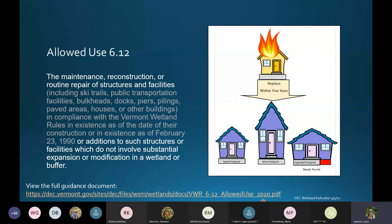We have a full guidance document for the abandonment and reconstruction portion of this allowed use. Here we have a house that unfortunately burns down — they can replace it in the same footprint, same size, or taller as long as it's within the same footprint. If it's expanding substantially, it requires a permit. A structure or facility is considered abandoned if its original features are not evident or it cannot be easily distinguished from the adjacent area. Abandonment also includes a structure not timely reconstructed — if a house burns down and isn't replaced within five years, it's considered abandoned and you need a permit.